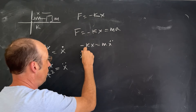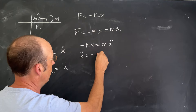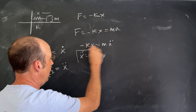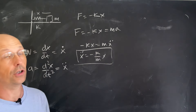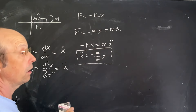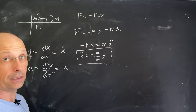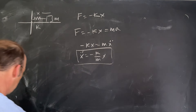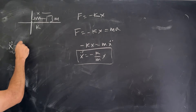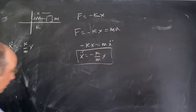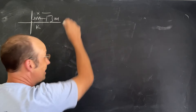I can solve that for x-double-dot: it equals negative k over m times x. That's my differential equation of motion, and what we want to do is solve it. There are lots of ways to solve differential equations. The best way is to guess.